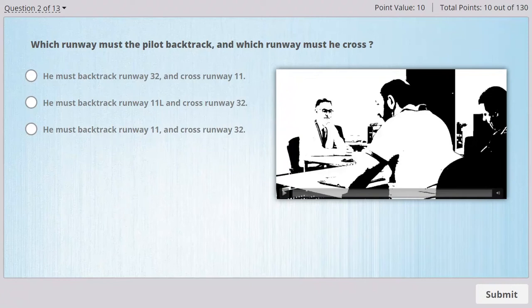Sun Air 978, reaching intersection with runway 32. Sun Air 978, cross runway 32. Crossing runway 32.